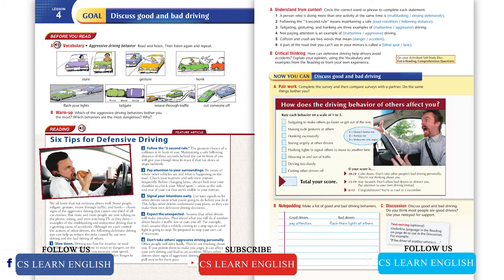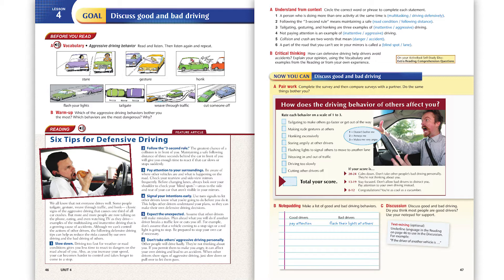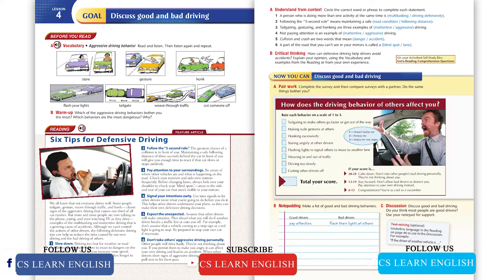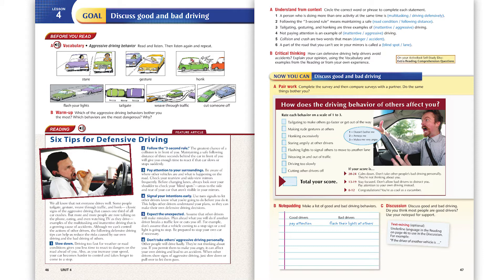Page 46, Reading. Read and listen: Six Tips for Defensive Driving. We all know that not everyone drives well. Some people tailgate, gesture, weave through traffic, and honk — classic signs of the aggressive driving that causes one-third of all car crashes. But more and more people are now talking on the phone, eating, and even watching TV as they drive — examples of the multitasking and inattentive driving that is a growing cause of accidents. Although we can't control the actions of other drivers, the following defensive driving tips can help us reduce the risks.